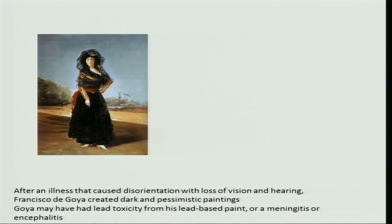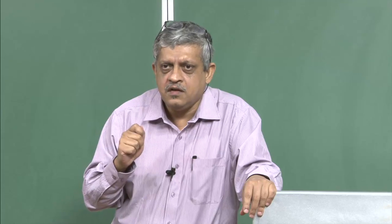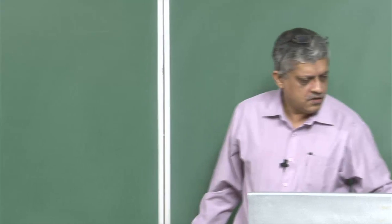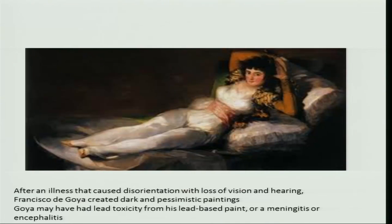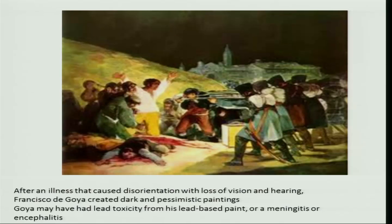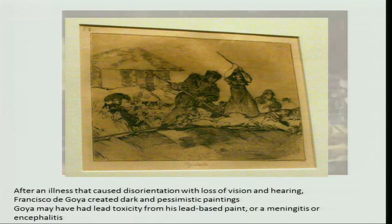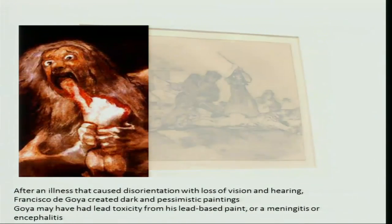Francisco Goya started off painting like this. And as he grew older, he started getting loss of vision, loss of hearing. He probably developed mental illness because of lead toxicity, which probably came from the white lead paints that they used. And he started doing paintings which were darker and darker and darker.